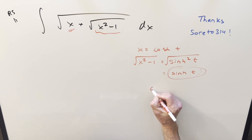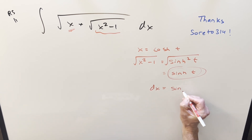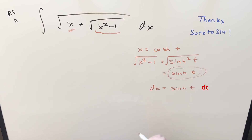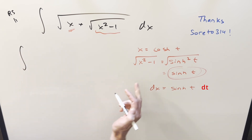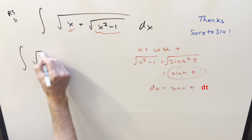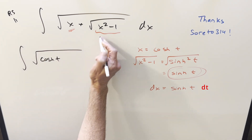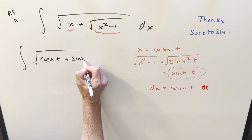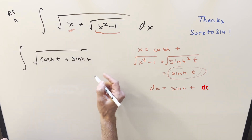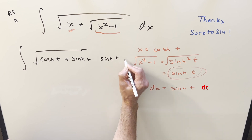Next, let me take a derivative to get our dx value. We get dx equals sinh of t dt. Substituting in: x is cosh t, so we have square root of cosh t. We determined the x squared minus 1 term is sinh t, so we have cosh t plus sinh t, times sinh t dt.